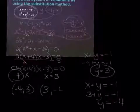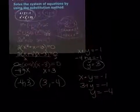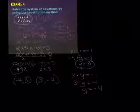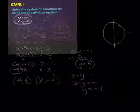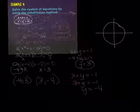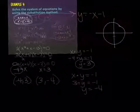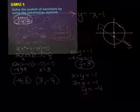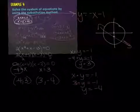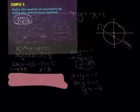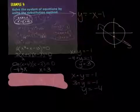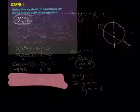And when x is three, y is negative four. So again, if you think about what this is — this is a circle with a radius of five, and this is a line. If I solved it, I'd get y equals negative x minus one. So this would be a line that runs through that circle.